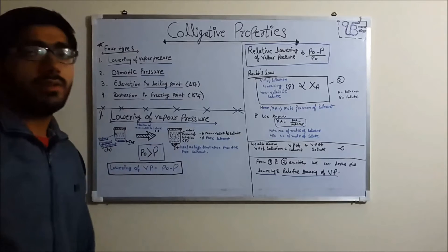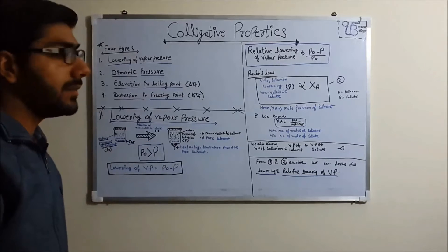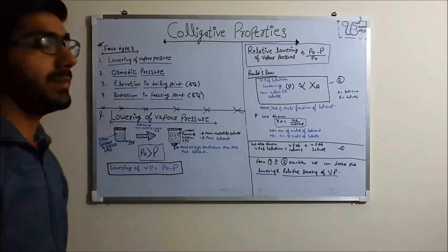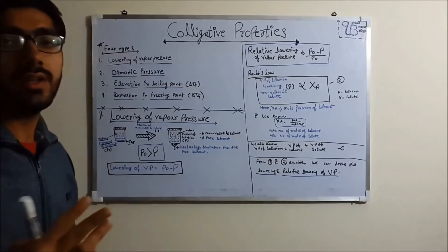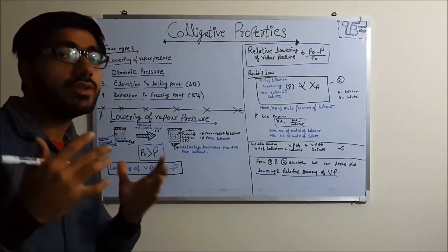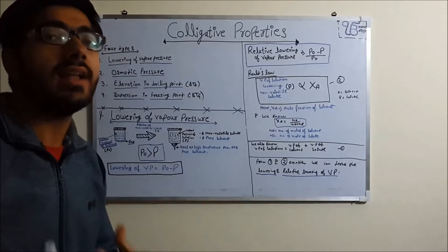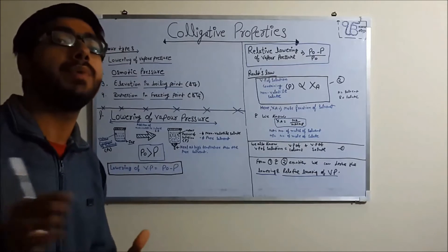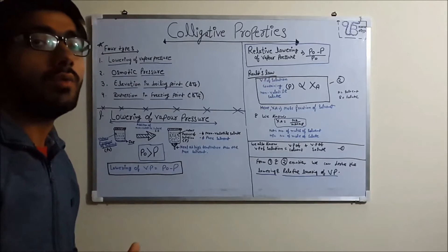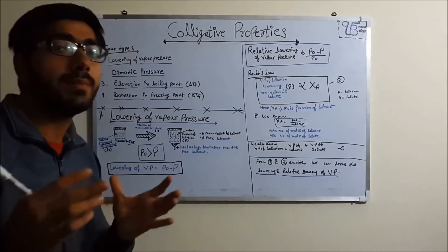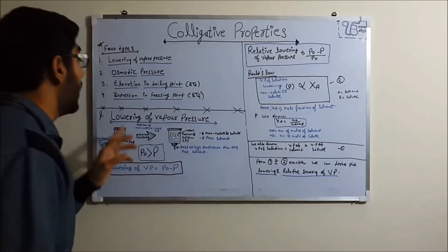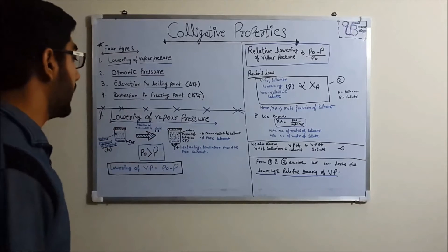The first colligative property is lowering of vapor pressure. As the name describes, lowering of vapor pressure means vapor pressure is lowered by the addition of some non-volatile solute to the pure solvent, where the pure solvent originally has a very high vapor pressure.